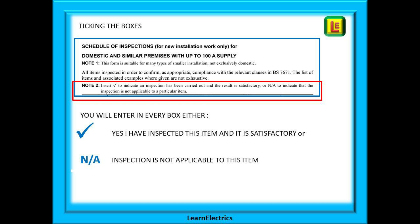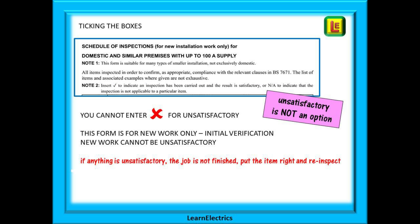You will enter either a tick to say 'yes, I have inspected this item and it is satisfactory,' or you will enter N/A to say that inspection is not applicable to this item — this item does not apply to this circuit. This is very important: you cannot enter an X for unsatisfactory. This form, the schedule of inspections, is for new work only — initial verification — and new work cannot be unsatisfactory.